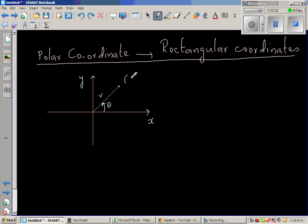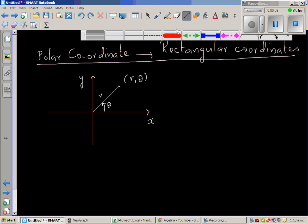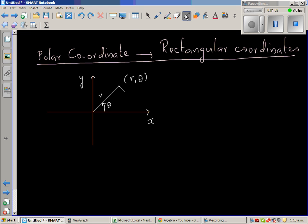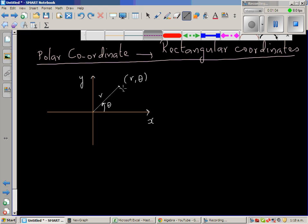So this point, you can say in polar form, is (r, θ). Now this point, let me join this point with the x-axis. Let me draw a dotted line.